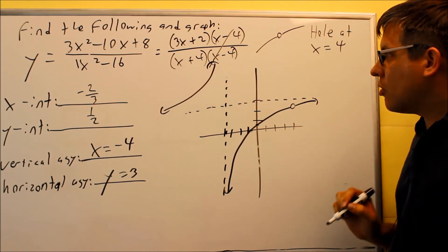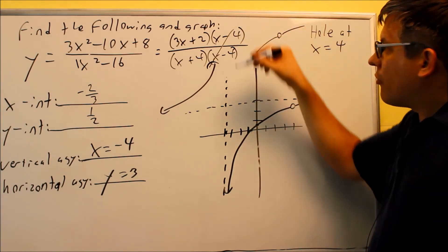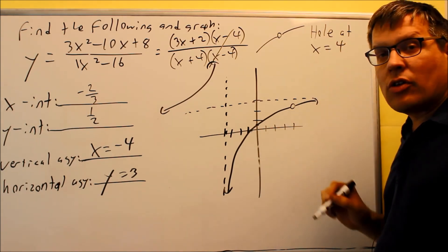But we have to account for that extra one that we canceled out. So that's why you have an open circle and that'll happen again anytime you cancel a term out from top and bottom, that's where you end up having a hole.